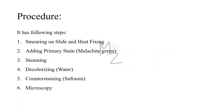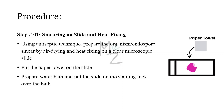The procedure consists of six steps. Step one: smearing on slide and heat fixing. Step two: adding the primary stain, malachite green. Step three: steaming to fix the stain. Step four: decolorizing with distilled water. Step five: counter staining with safranine. Step six: microscopy to visualize the specimen. Let's discuss each step in detail.